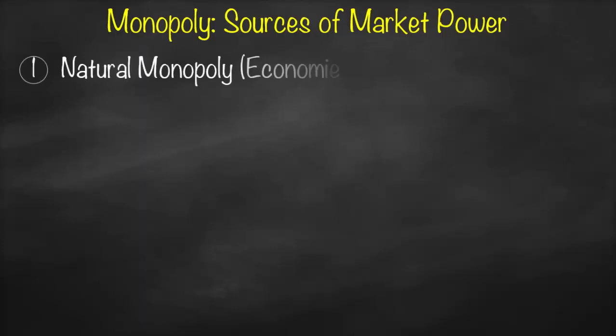The first source of market power is what we call natural monopoly. Natural monopoly is based on economies of scale, which means that some industries are characterized by large volume production. Therefore, in order to increase quantity, what will happen to average total cost? It would be lower.